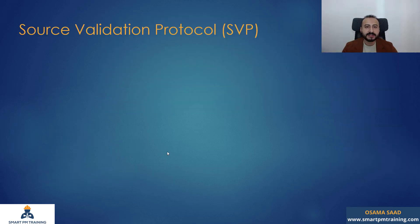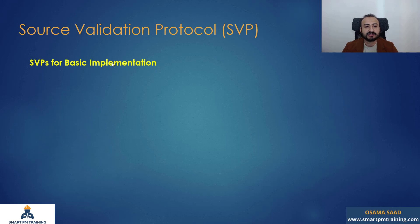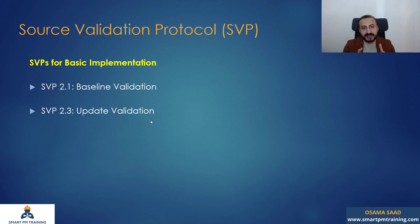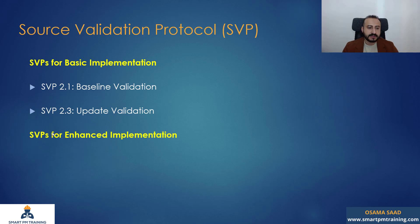What do we need to implement? The source validation protocols for basic implementation: 2.1 baseline validation. We need the baseline and the 2.3 update validation because we are comparing an update to an update. But in our first window, we are comparing the first update to the baseline, so that's why we need a baseline. For enhanced implementation, we need the as-built validation.